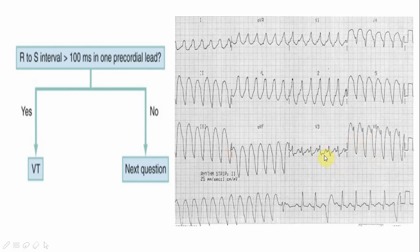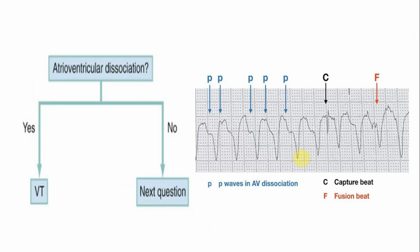If the Brugada sign is absent we proceed to Step 3: atrioventricular dissociation. In this ECG you can see P waves coming at regular intervals buried within the QRS complexes, but there is no relationship or association between the P waves and the QRS complexes. The P wave activity remains within the atria and the QRS activity remains within the ventricle — that is AV dissociation, which is a very characteristic feature of VT.